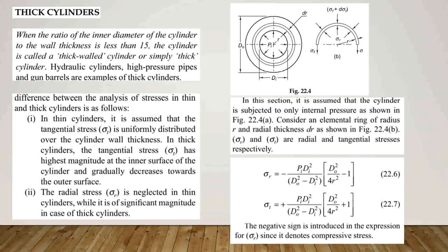Next are thick cylinders. Thick cylinders have the ratio of inner diameter to wall thickness less than 15, so they are called thick-wall cylinders or simply thick cylinders. These cylinders are used in hydraulic cylinders, high-pressure pipes, and gun barrels.